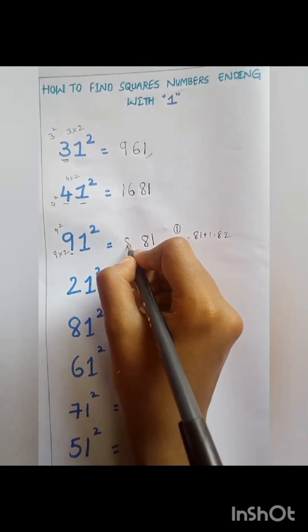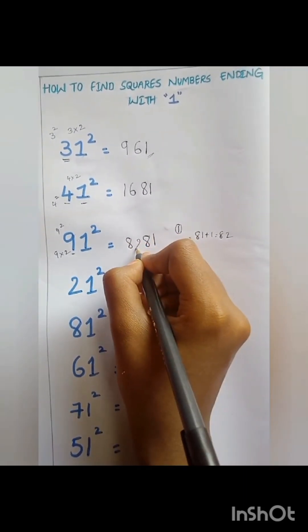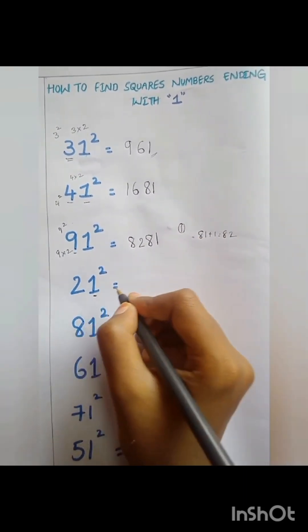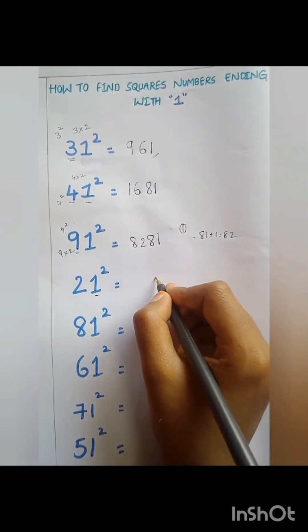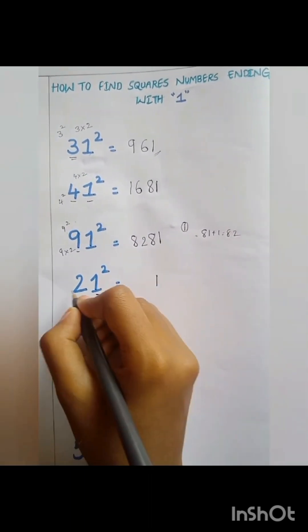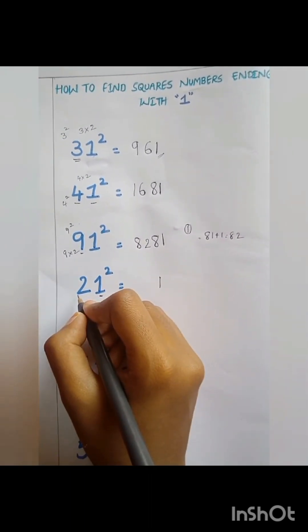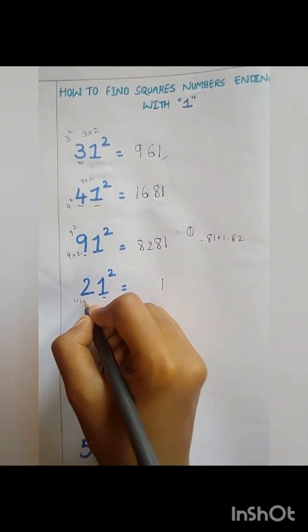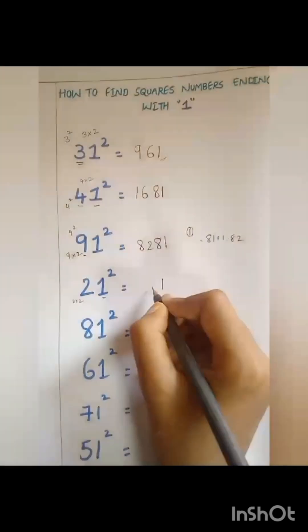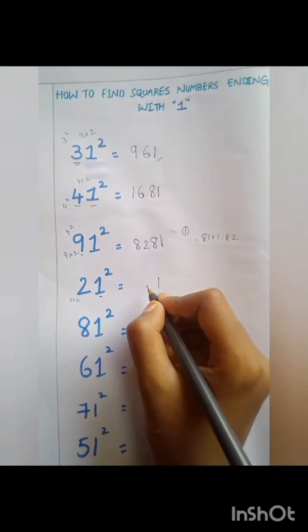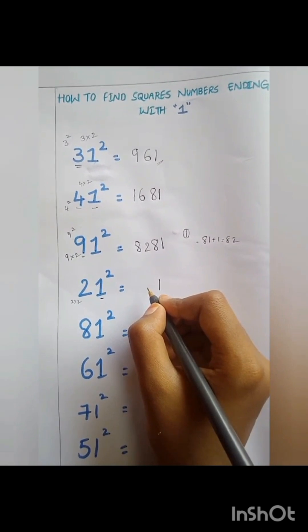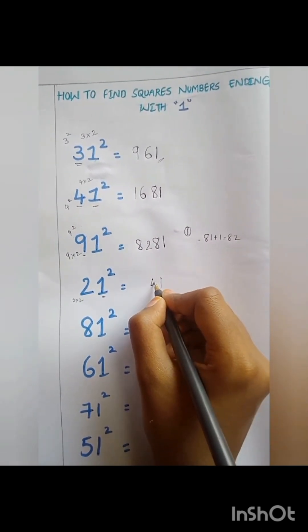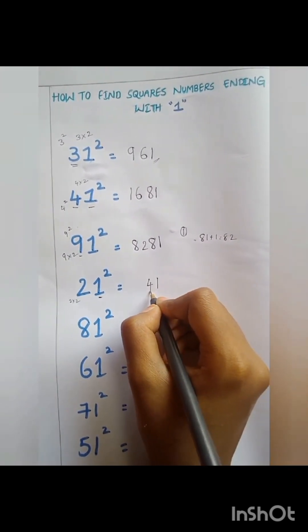Then 21 squared. The unit digit is equal to 1. And 2 into 2 is equal to 4. Again, 2 squared is equal to 4. Therefore 21 squared is equal to 441.